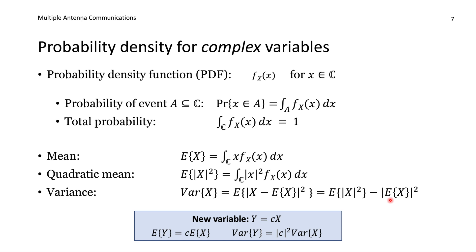If we scale a complex random variable x by a constant complex scalar c to get y = cx, the mean of y is c times the mean of x. The variance of y equals the variance of x multiplied by the absolute value squared of c, since we can factor c out of the integral and it contributes |c| squared.